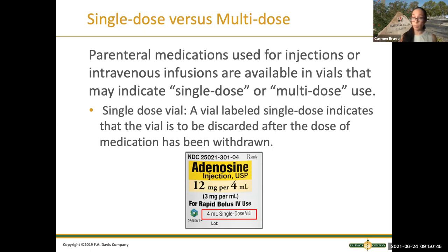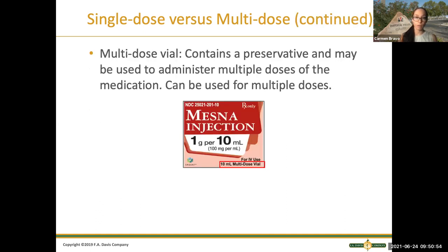The multi-dose medication does have preservatives, so it can be punctured multiple times. That has to be indicated in the label. You see right there it says 'single dose vial.' And there's a sample of the multi-dose — it says there's 100 milligrams per each mL in a 10 mL vial — it's pretty big and can be used multiple times.